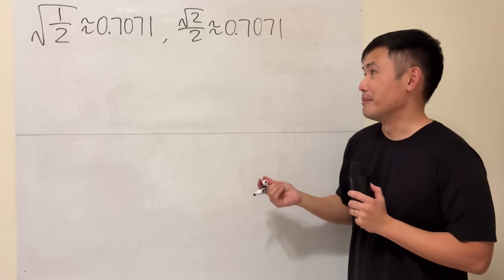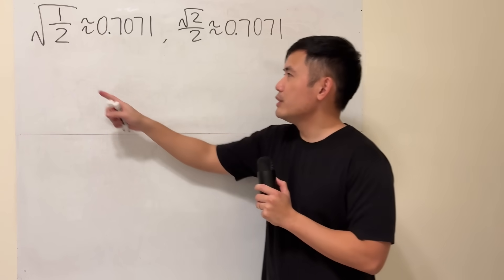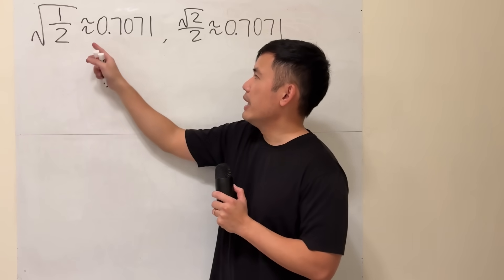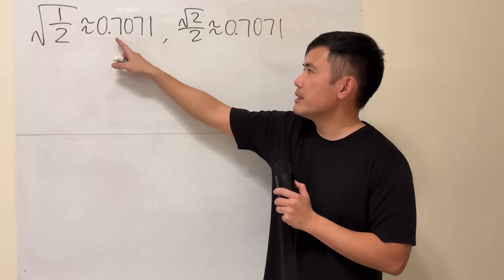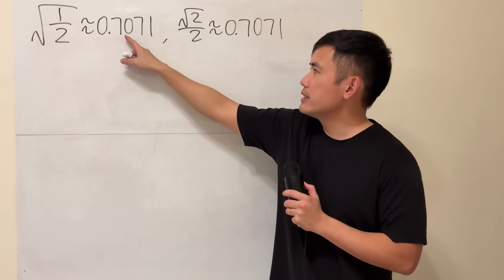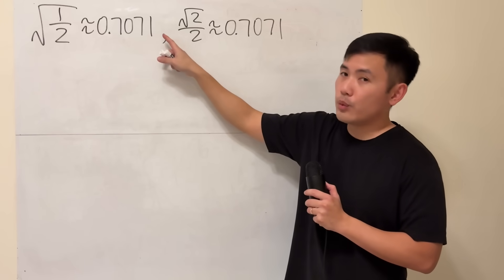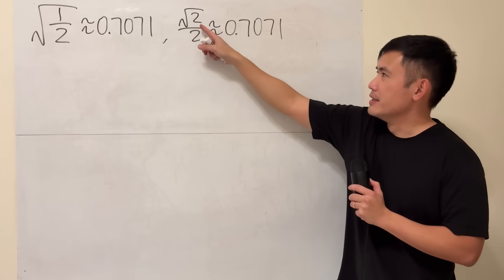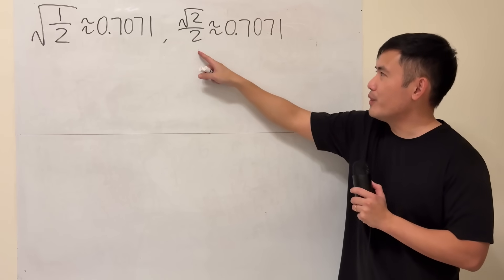So let's take a look at the math. Firstly, we have square root of 1 over 2, and this is approximately 0.7071. And that's the same as square root of 2 over 2, which is also approximately 0.7071.